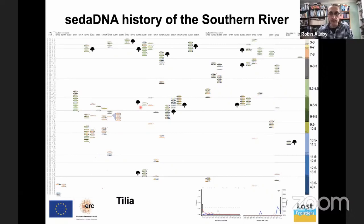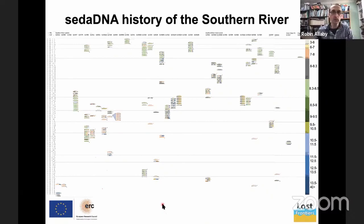There's an example where we've looked specifically at these Tilia reads — the ones that have been through extreme sorting — and we see a damage signal, so we're pretty sure that's real lime.